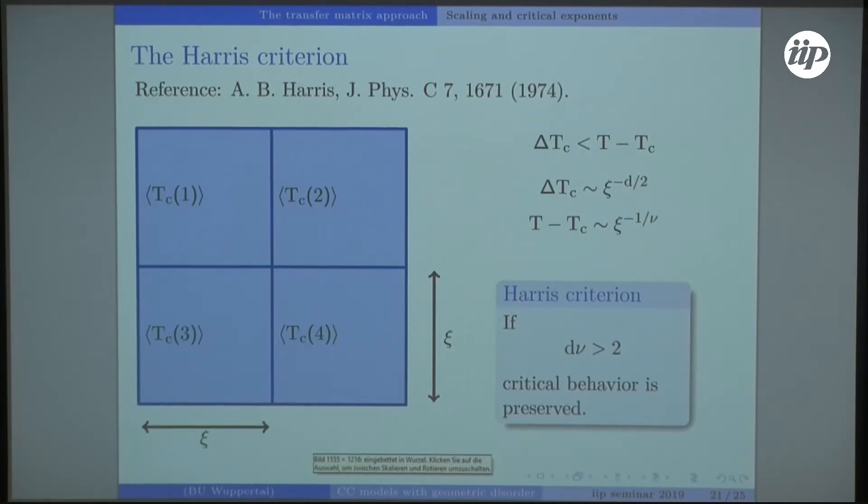The basic idea is we intersect the system into different correlated patches, and each of these patches has its own critical point. We are looking at how these critical points vary next to each other.